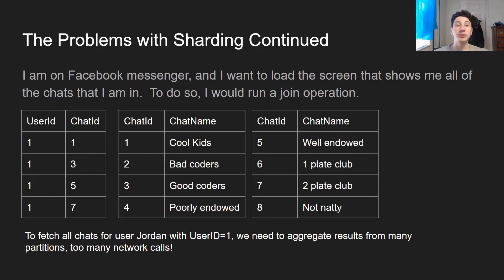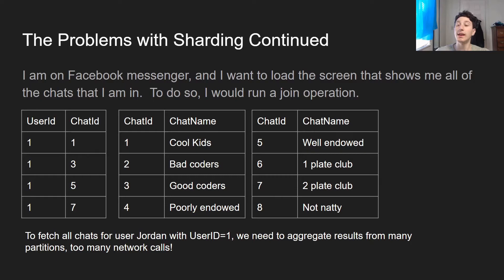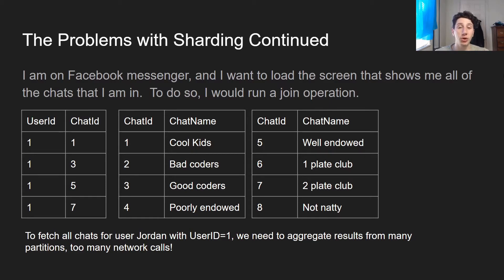Continuing with the problems of sharding, let's look at what happens on reads. Imagine I'm using Facebook Messenger and want to see all the chats I'm in. I'm Jordan, user ID 1. According to a many-to-many relationship table called user_chats, I'm a member of chats with IDs 1, 3, 5, and 7. The first partition holds chat IDs 1 to 4, and the second holds chat IDs 5 to 8. So I have to query both partitions and then aggregate those results. Making multiple network calls is problematic because one could fail, giving me an incomplete query, or in the general case, multiple queries just take longer. Network requests are always costly, and you want to minimize them when you can.